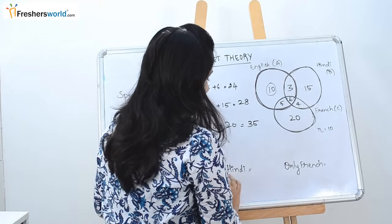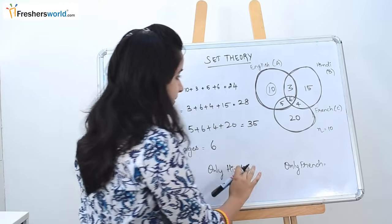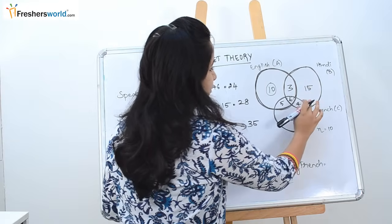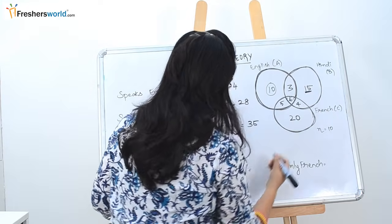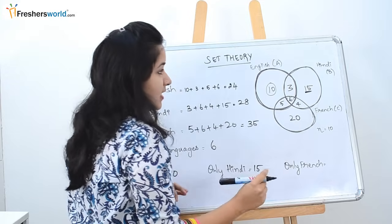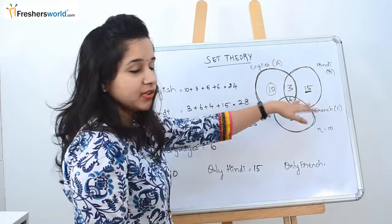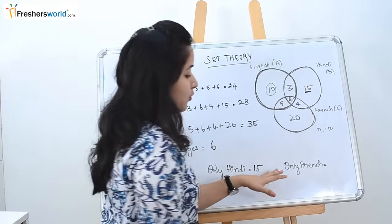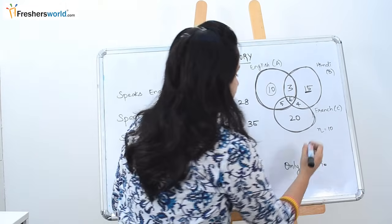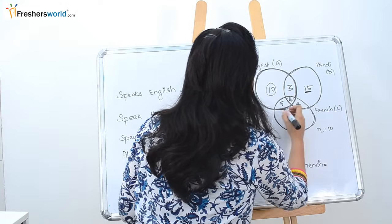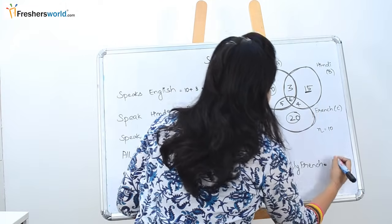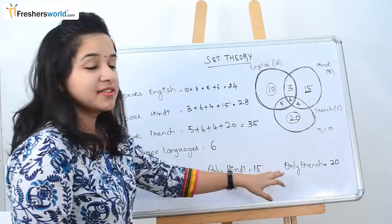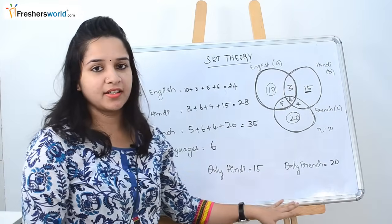Next they are asking for only Hindi. Similarly to how we solved for English, for Hindi it is 15 — that is the number of people who know only Hindi and don't know English or French. Next is the number of people who know only French. French is 20 — that is the number of people who know only French. These are very basic questions that we will see in set theory.